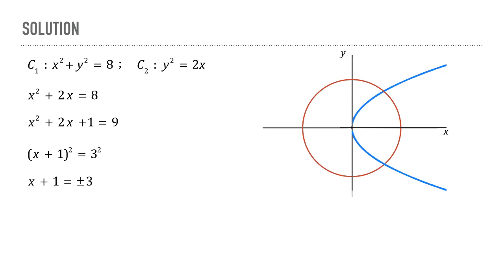So x + 1 is equal to ±3, which gives the two values of x as 2 and -4. Since the point of intersection is in the first quadrant, we take x equal to 2. The corresponding value of y can also be easily found. It's equal to 2, and therefore the point of intersection is (2, 2). Let us mark this in the diagram.